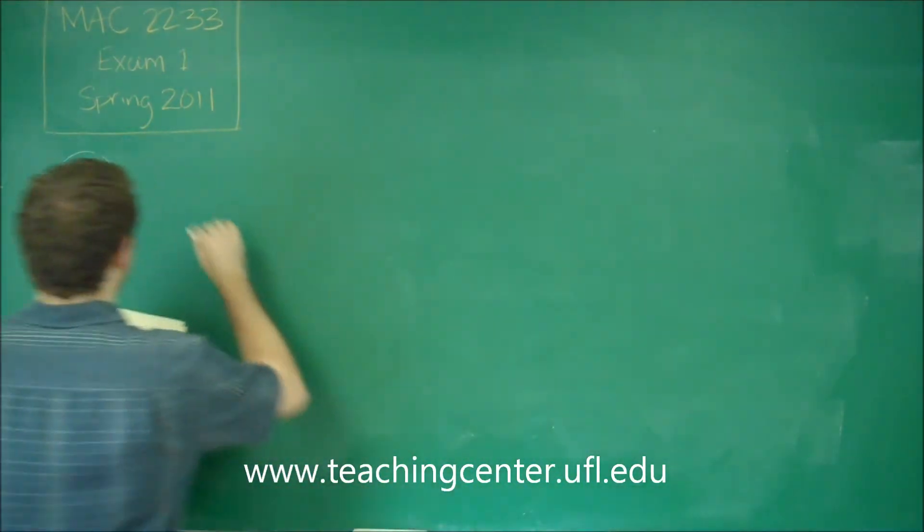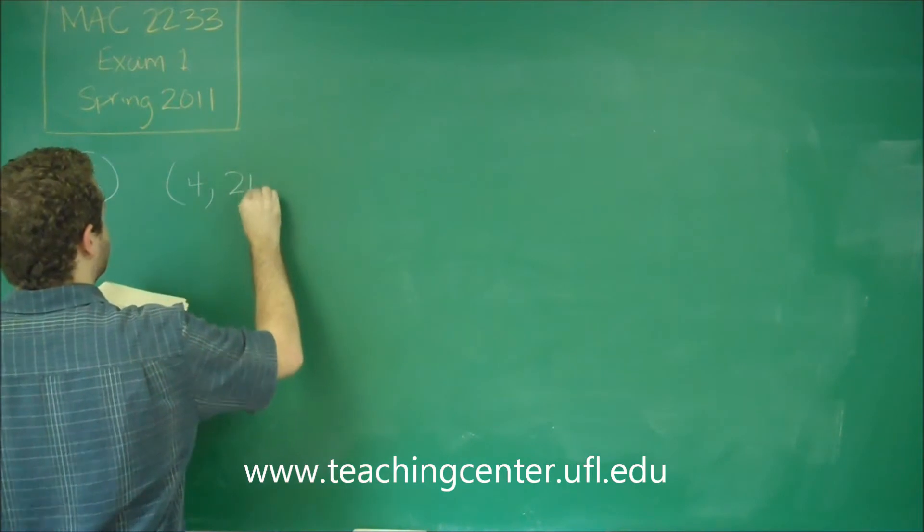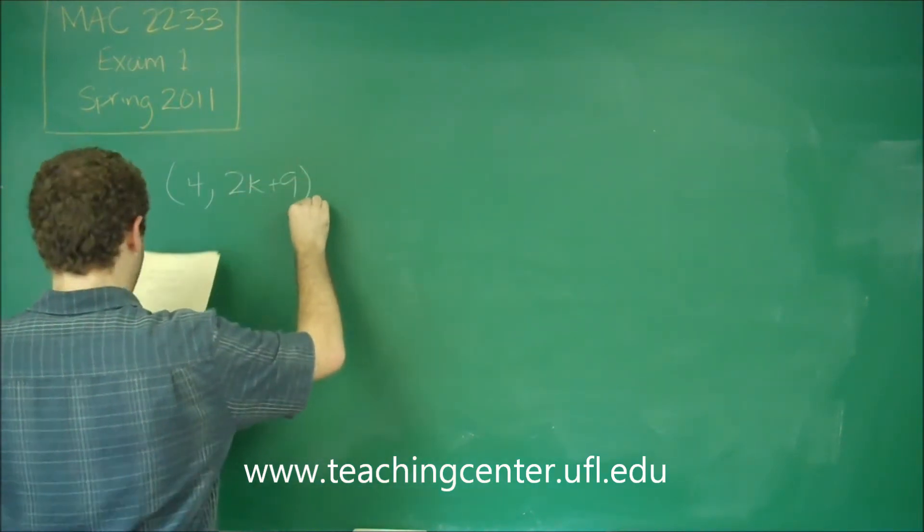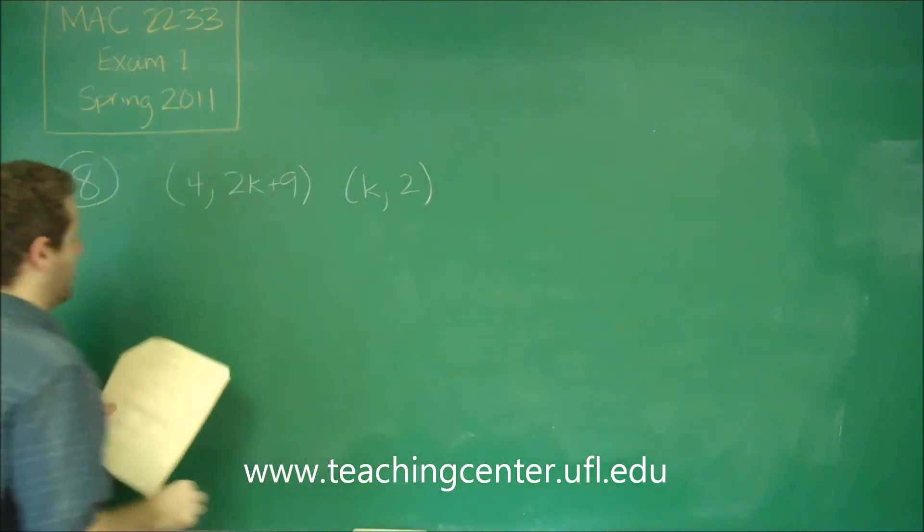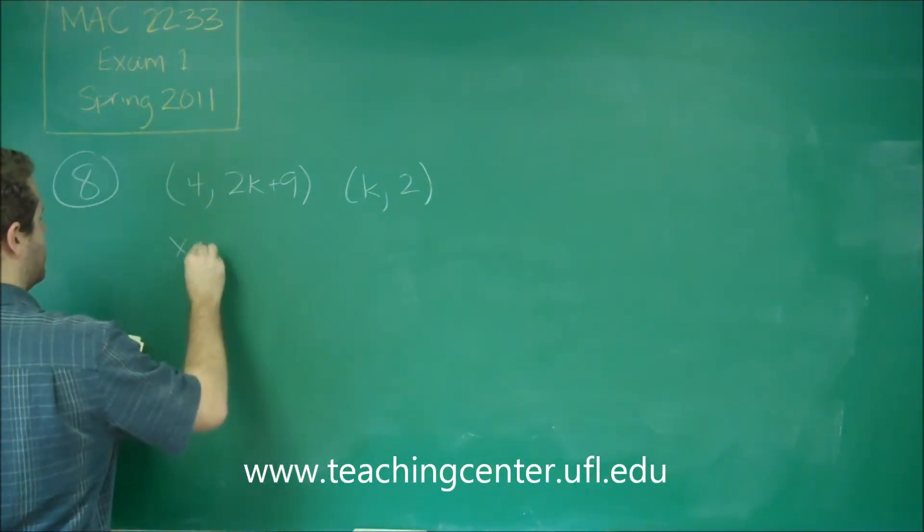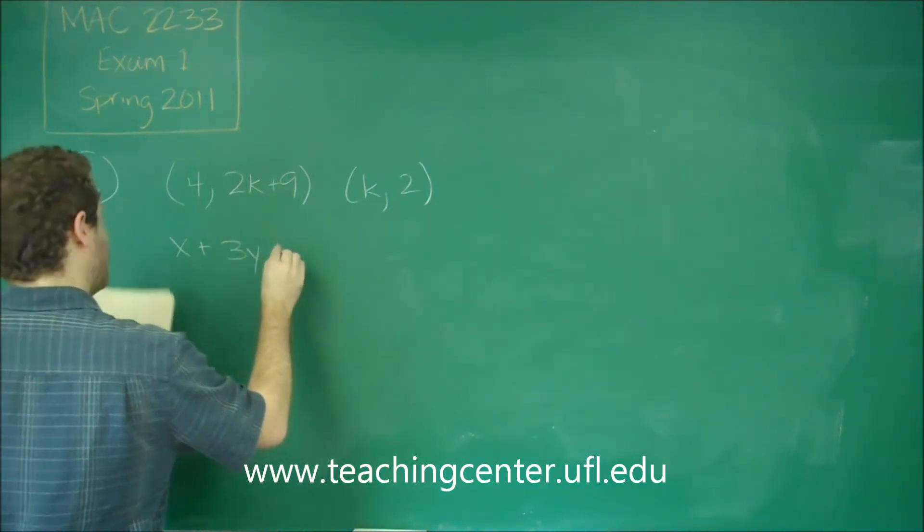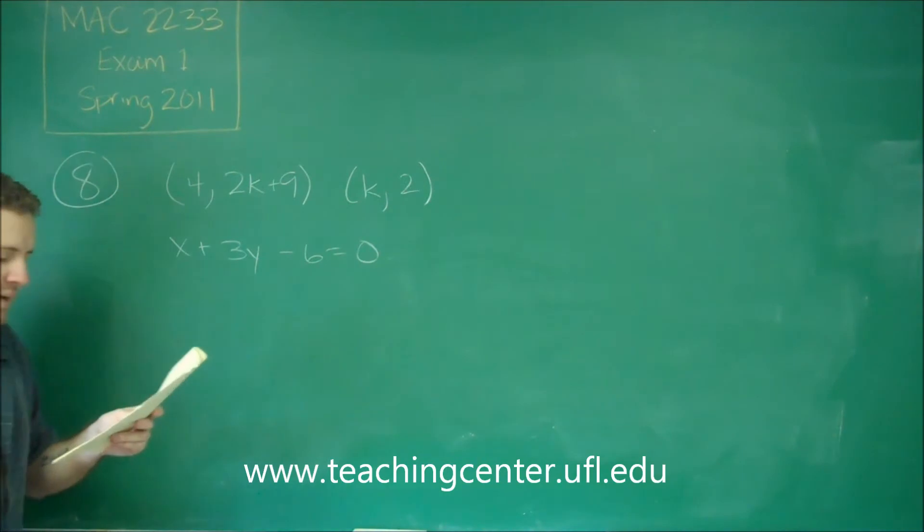So we have two lines. We have one that passes through the points (4, 2K+9) and the point (K, 2). The other line is the equation X + 3Y - 6 = 0. And we want these two lines to be perpendicular.